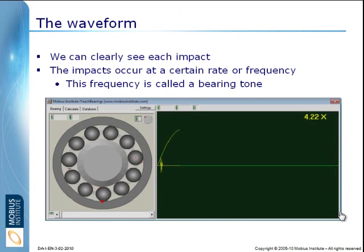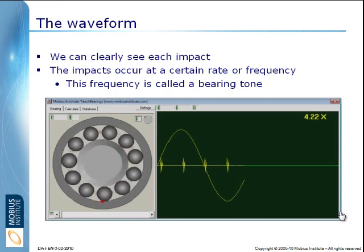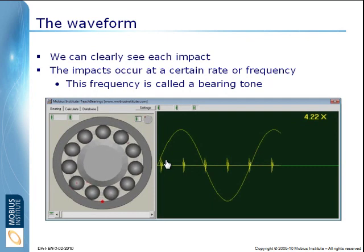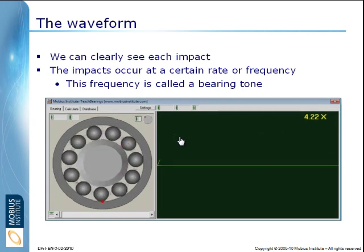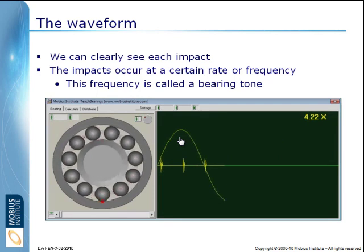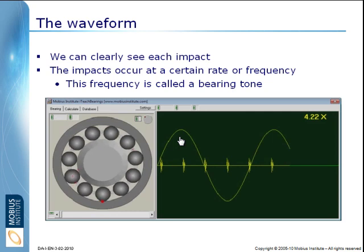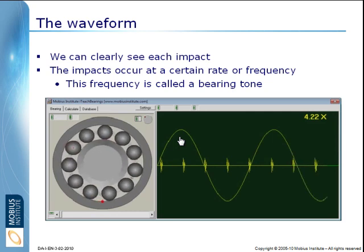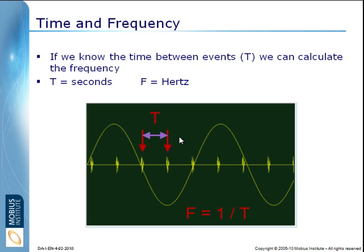The first way is called the time waveform. As we see this graph being plotted, we have a big sine wave, which is the shaft turning around. And then we can also see each ball hitting the fault at the bottom makes a little click. We can see these events or impacts directly in the time waveform. If we know the amount of time between impacts, we can calculate the frequency of impacting.